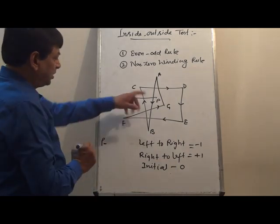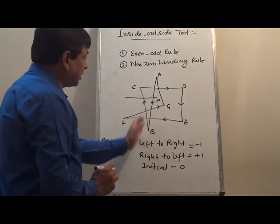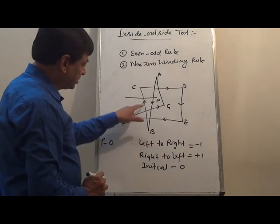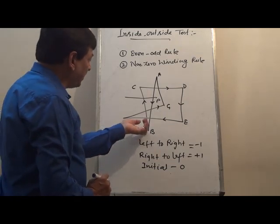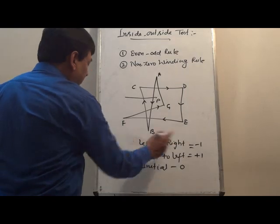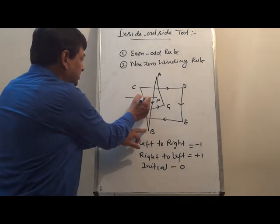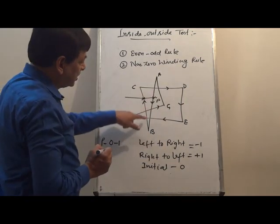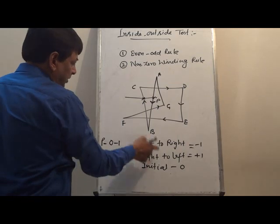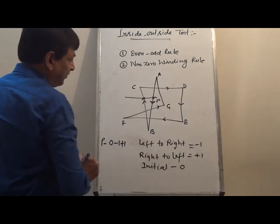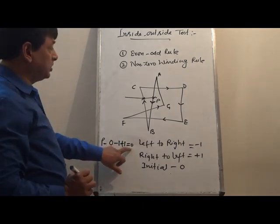For point P, initial value is 0. This crossing goes left to right, so we assign minus 1. The next crossing goes right to left, so we assign plus 1. The total sum is 0. If the sum is 0, then the point is outside the polygon.